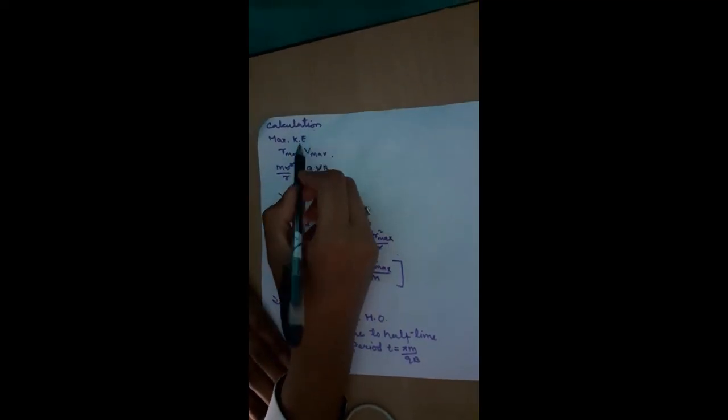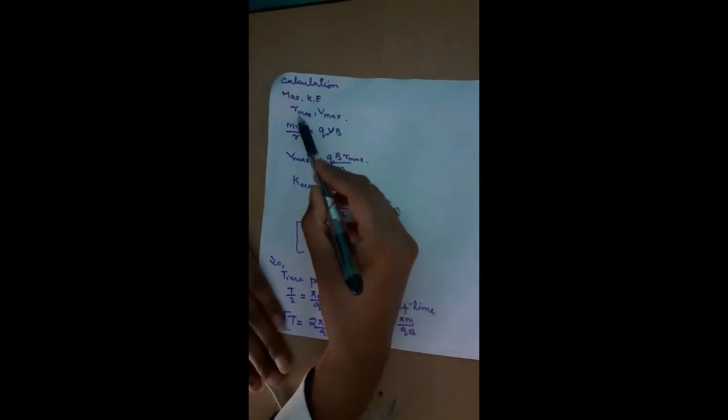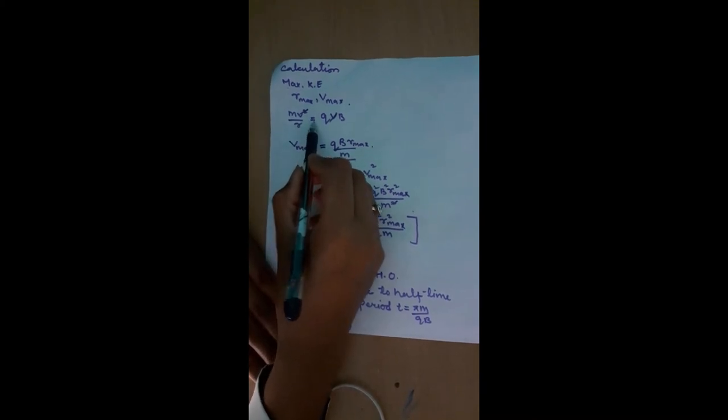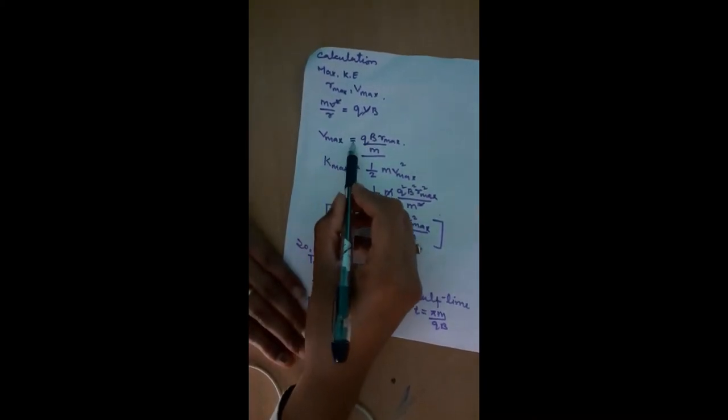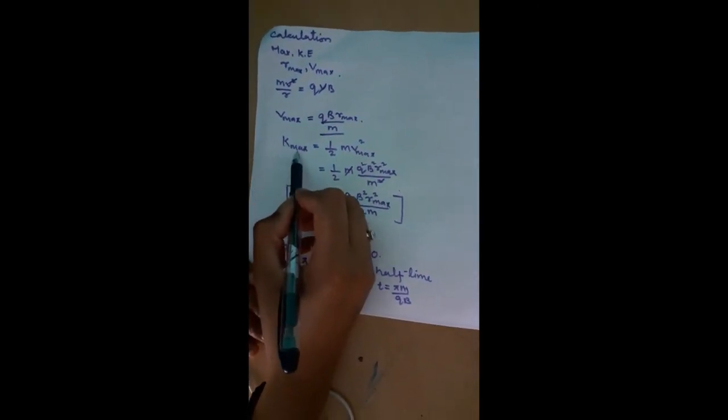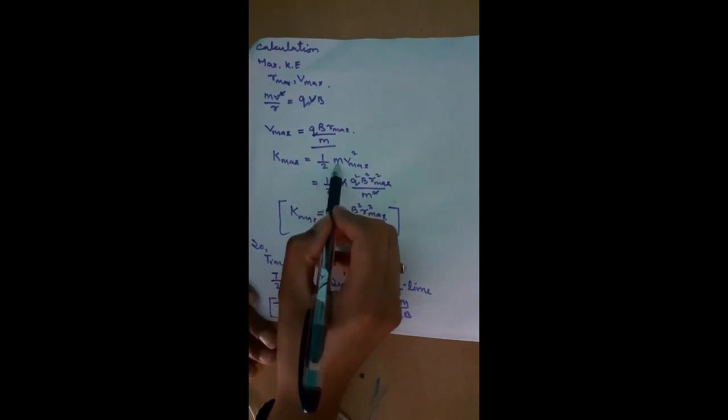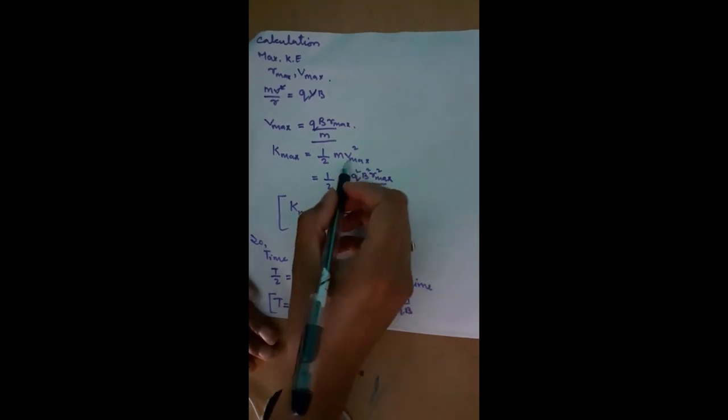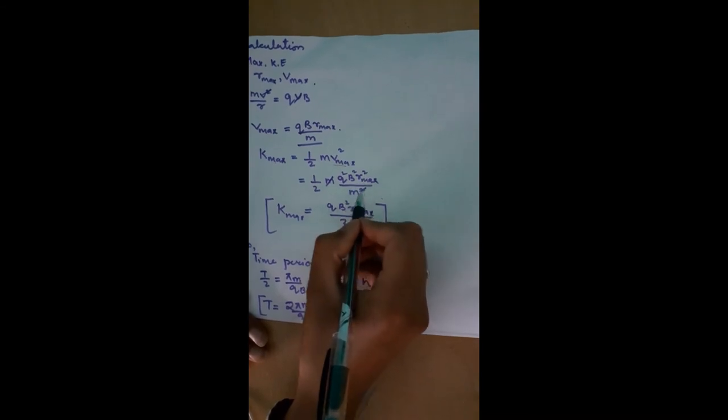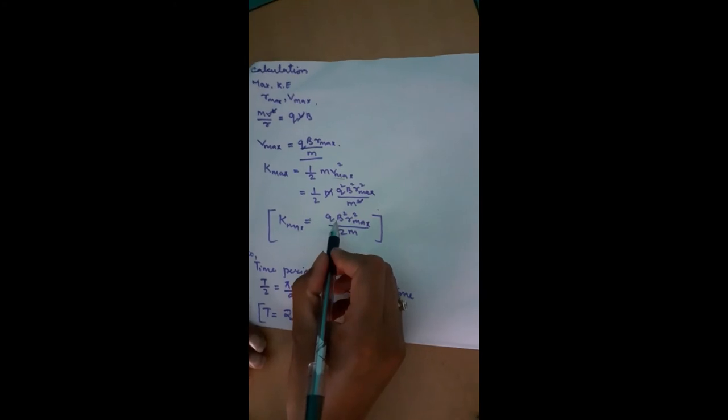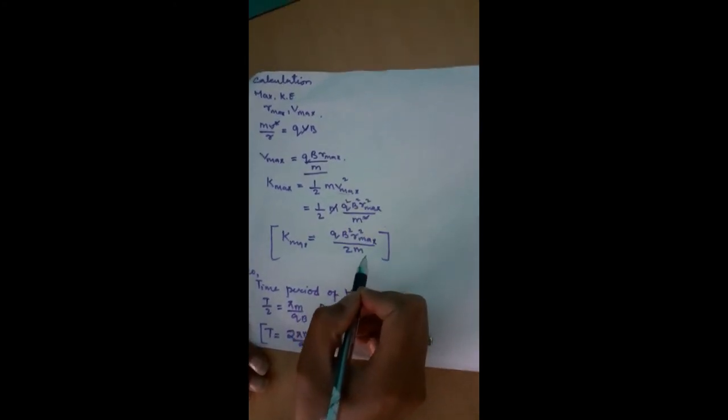Moving to the calculation part: maximum kinetic energy, R max, V max. We know that mv²/R equals Qvb. So V max equals Qb R max/m. Maximum kinetic energy equals half mv², so V max. Putting the value of V here, we get mQ²b²R²/m². Therefore, KE max equals Q²b²R max²/2m.